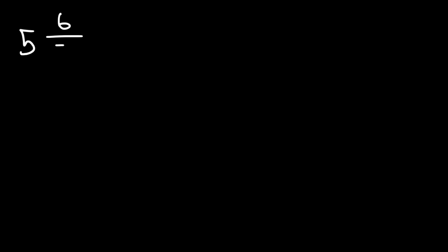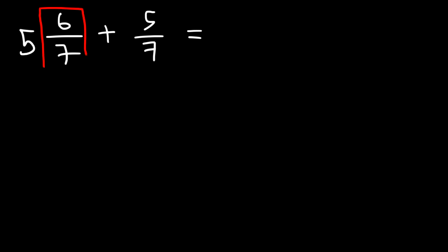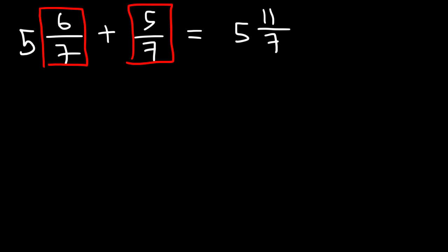Now let's work on a similar problem, but slightly different. Let's add 5 and 6 over 7 with 5 over 7. Based on the last examples, we know we can just add these two fractions together. 6 over 7 plus 5 over 7 is 11 over 7. But can we leave our answer like this? Notice that we have an improper fraction, so we need to do something about that.